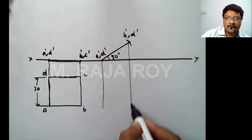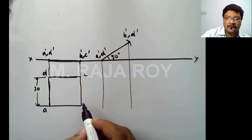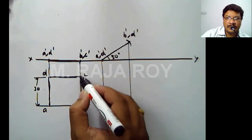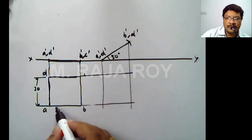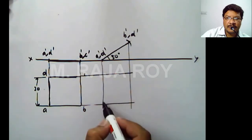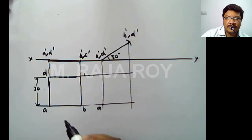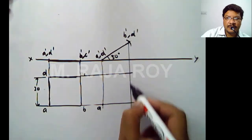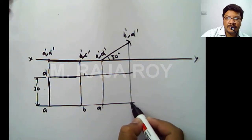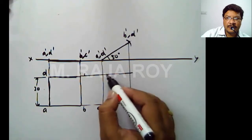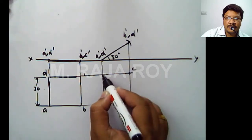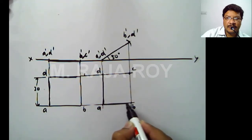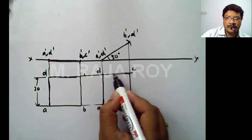To get the reduced shape, draw projectors from the front view and draw locus lines from the top view. This is the locus of A, and this is the projector of A dash — somewhere here you will get point A. This is the locus of B, and this is the projector of B dash — somewhere here you will get B. Similarly, here you will get C, and this point is D. This is the reduced top view in the second stage.